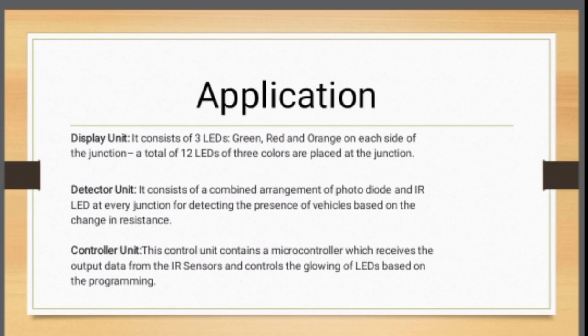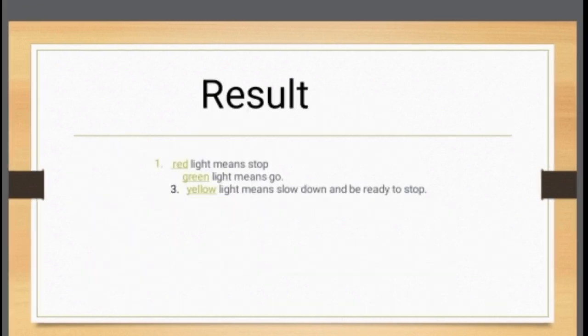Result: Red light means stop. Green light means go. Yellow light means slow down and be ready to stop.